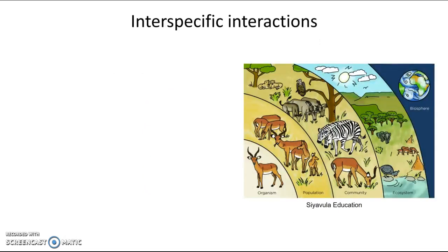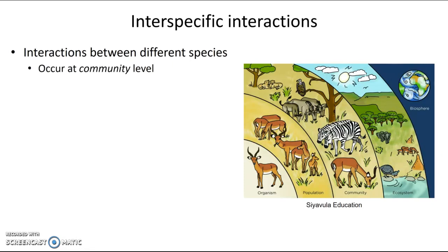Interspecific interactions, just as it sounds, are interactions that occur between different species, and these occur at the community level as opposed to the population level. A population is a group of organisms of the same species living and interacting in one area, but a community is all the individuals of many different species living and interacting in an area. These interactions result in adaptations because they affect the survival of the organisms involved. In this video we're going to define the most common types of interactions, and then in class we'll take a closer look at the different adaptations that evolve as a result.